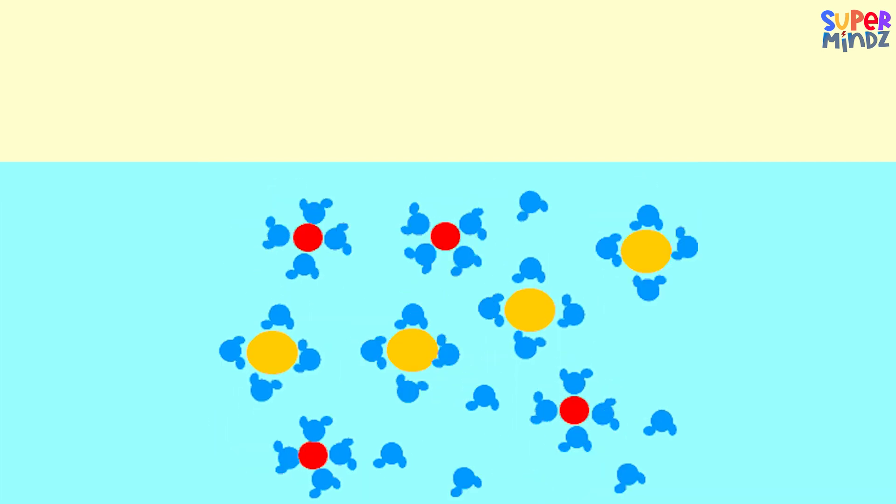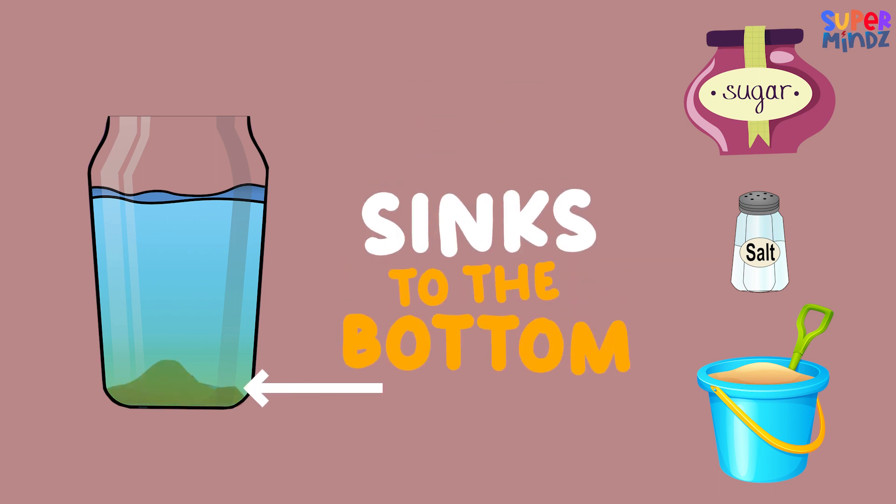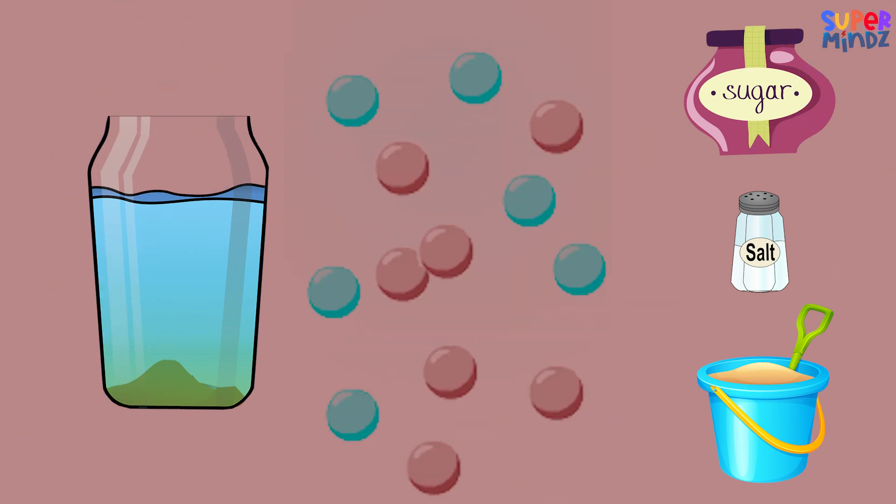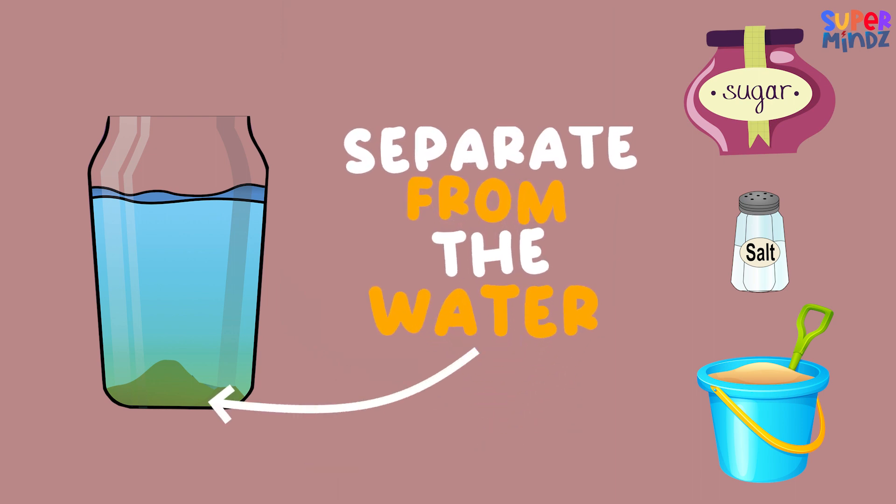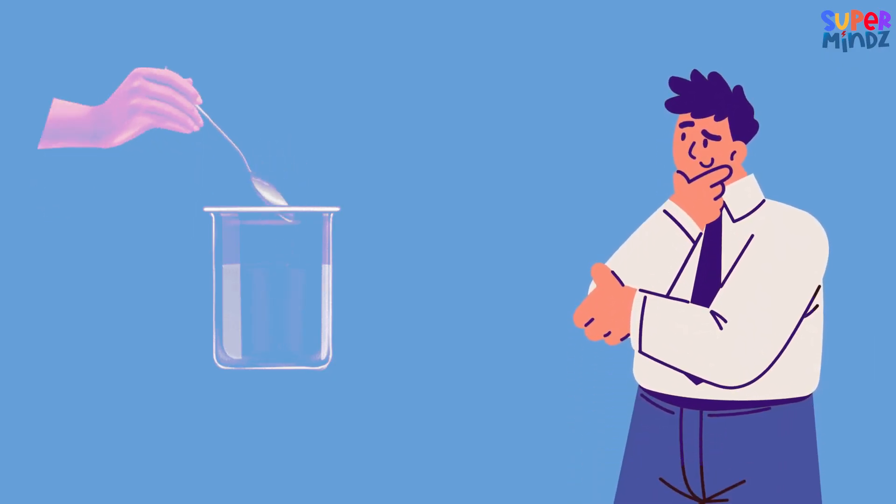But what about sand? If you pour sand into the water and stir, you'll notice that the sand just sinks to the bottom and stays there. That's because sand is insoluble in water. It doesn't like to mix with water at all. Instead, it just sits there separate from the water.